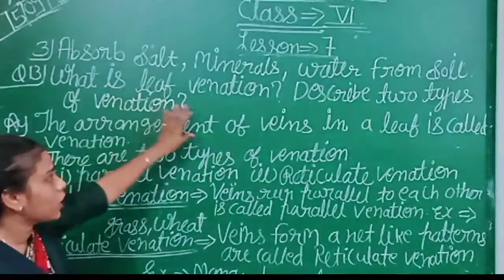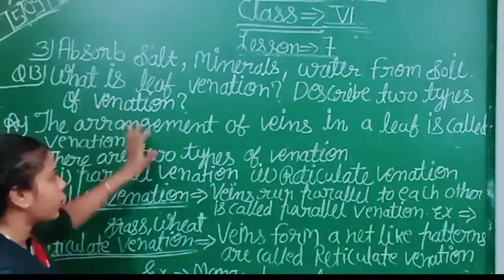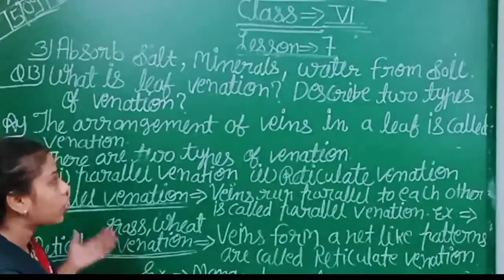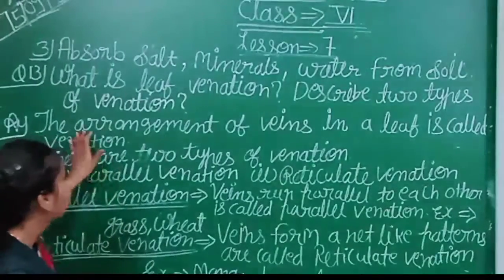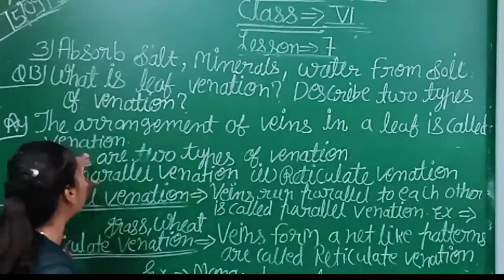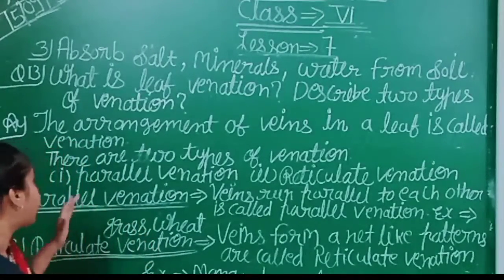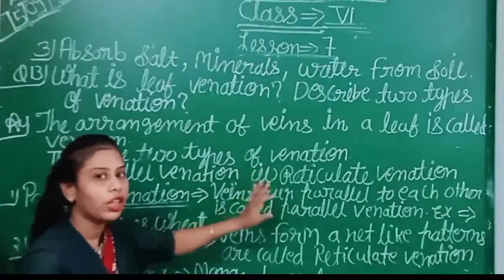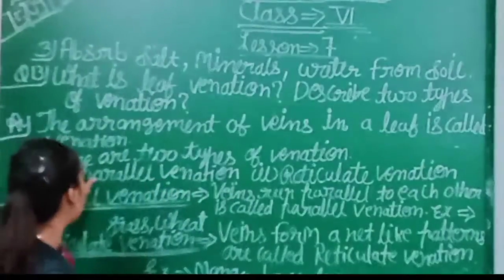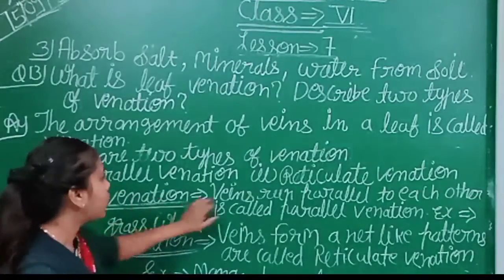The arrangement of veins in a leaf is called venation. We have to deal with the best case, the venation types.